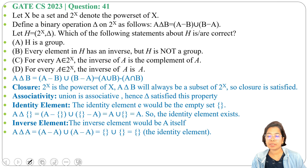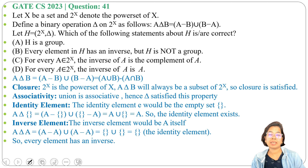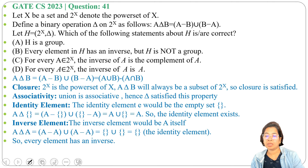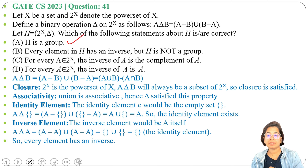We found that the delta operation is closed, associative, has an identity element, and has an inverse element. Hence H is a group. Now let's check all the options. Option A: H is a group — yes, this is true.